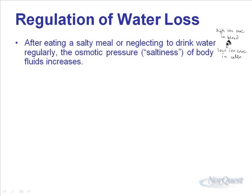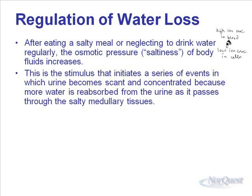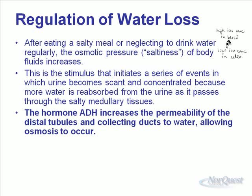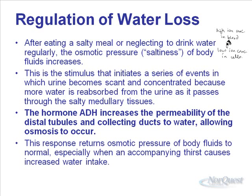This osmotic pressure — the force of water being drawn into our circulatory system — is going to stimulate a series of events. Urine becomes scant and concentrated, usually more yellow, as water is reabsorbed from the urine back into the circulatory system. ADH, antidiuretic hormone, increases the permeability of the distal tubule and collecting ducts to water, allowing osmosis to occur. This returns osmotic pressure to normal and causes us to feel thirsty, both decreasing ion concentration in the blood.